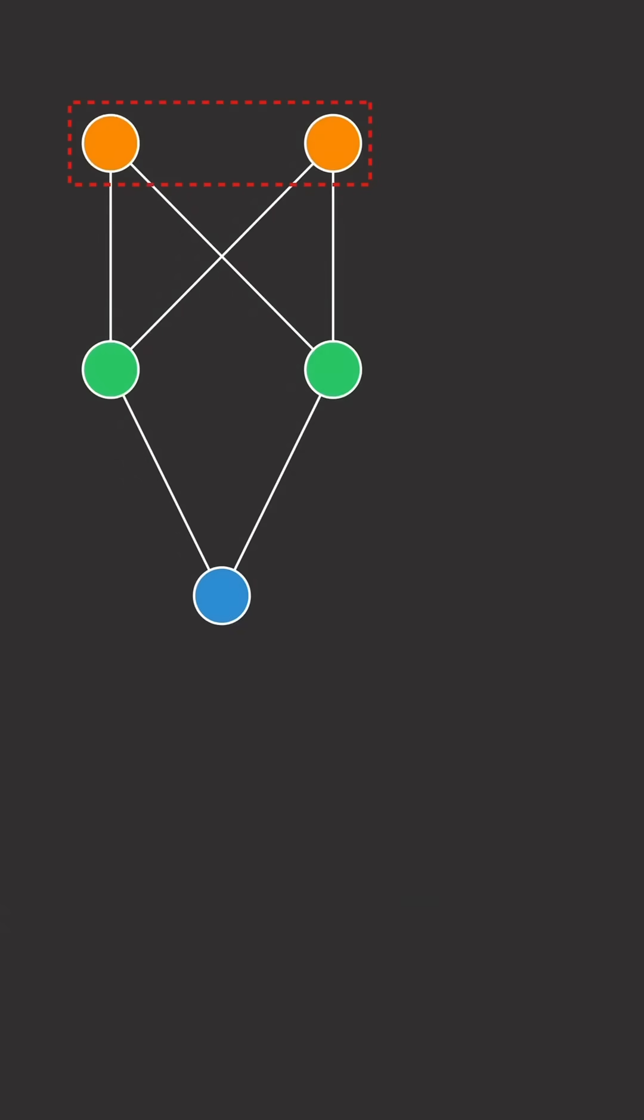Consider a neural network with two input features, two hidden units, and one output neuron.